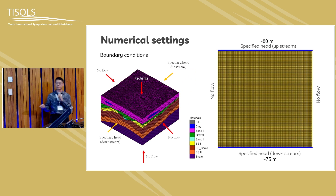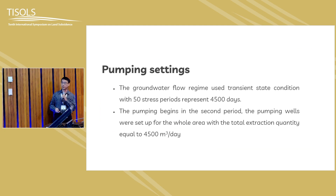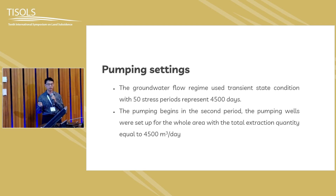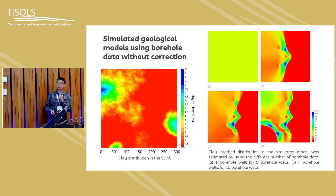For the settings, we're using very simplified models: no-flow boundaries at two sides and specified head on the top and downstream areas. Since we would like to assess how geological model inferences affect results, we're using uniform pumping — meaning each grid cell has uniform pumping. We do not assess other inferences.